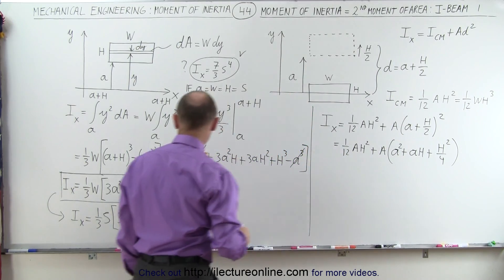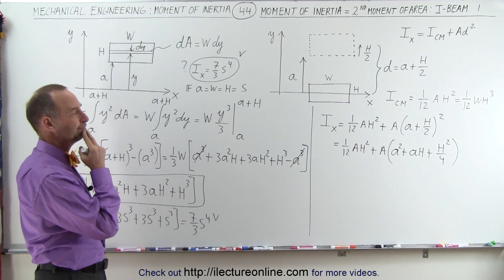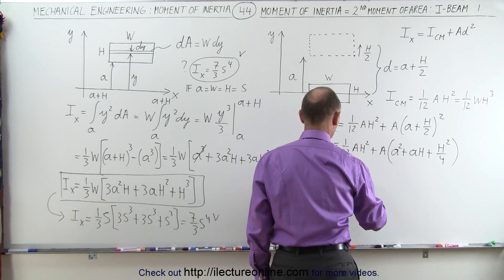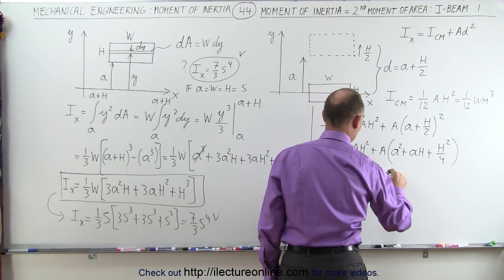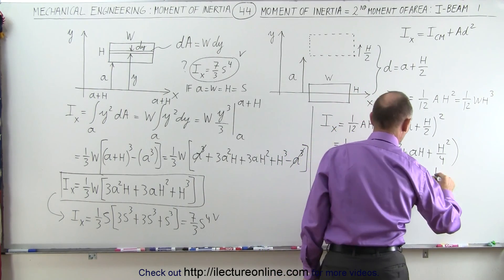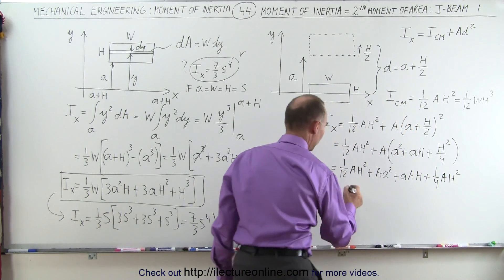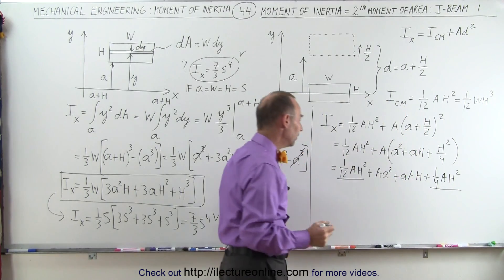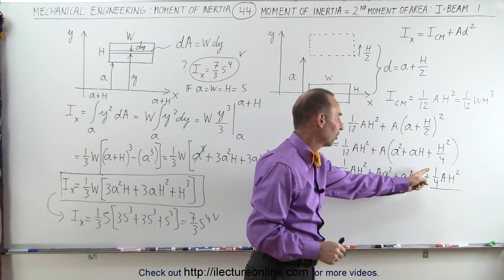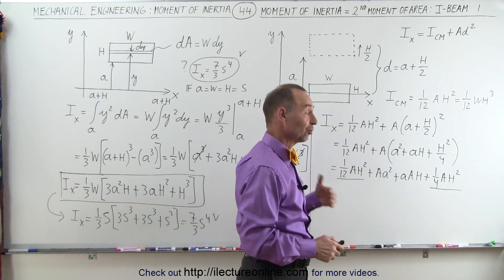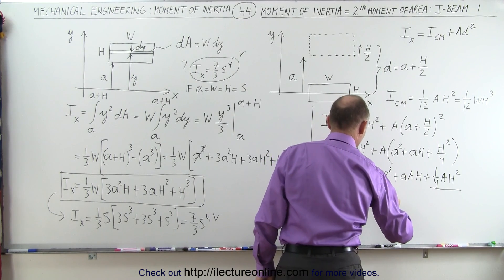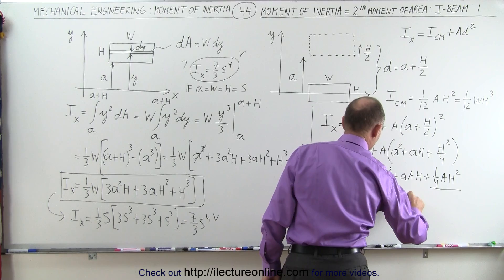Expanding, this becomes one-twelfth AH² plus A times (A² + AH + H²/4). Notice we have two like terms: one-twelfth AH² plus one-quarter AH². One-quarter is the same as three-twelfths, so three-twelfths plus one-twelfth is four-twelfths, which is one-third. So this becomes one-third times the area times H² plus A(A² + AH).